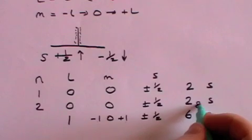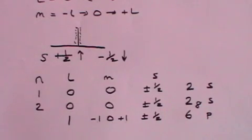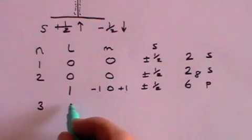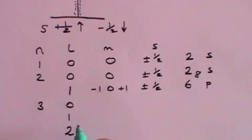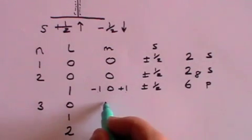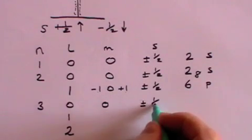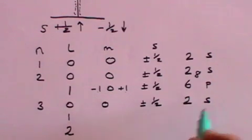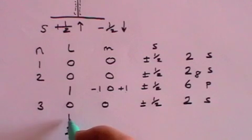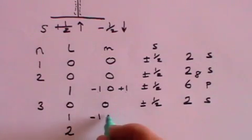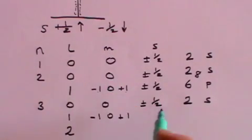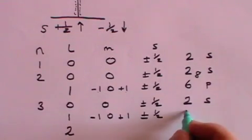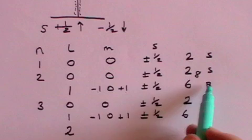For n equals two, the maximum number of electrons you can have is two plus six which equals eight. Let's do just one more, we'll take the n equals three level. Now the l value can be zero, one, or two. When it's zero, m can only be zero, and again you can have two electrons up or down, and that means there's a maximum of two in that s shell. When l is one, rather like here, you can have minus one and zero and plus one for the m quantum number, each of those can have an electron up or down, and so once again you've got six, and again just like here you've got the p level.